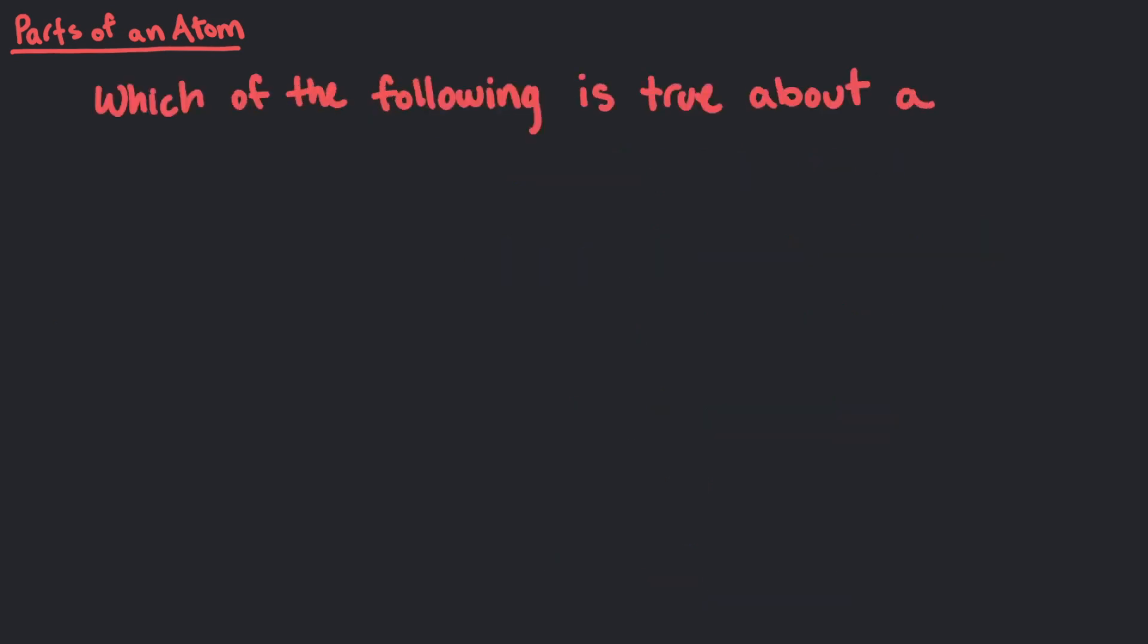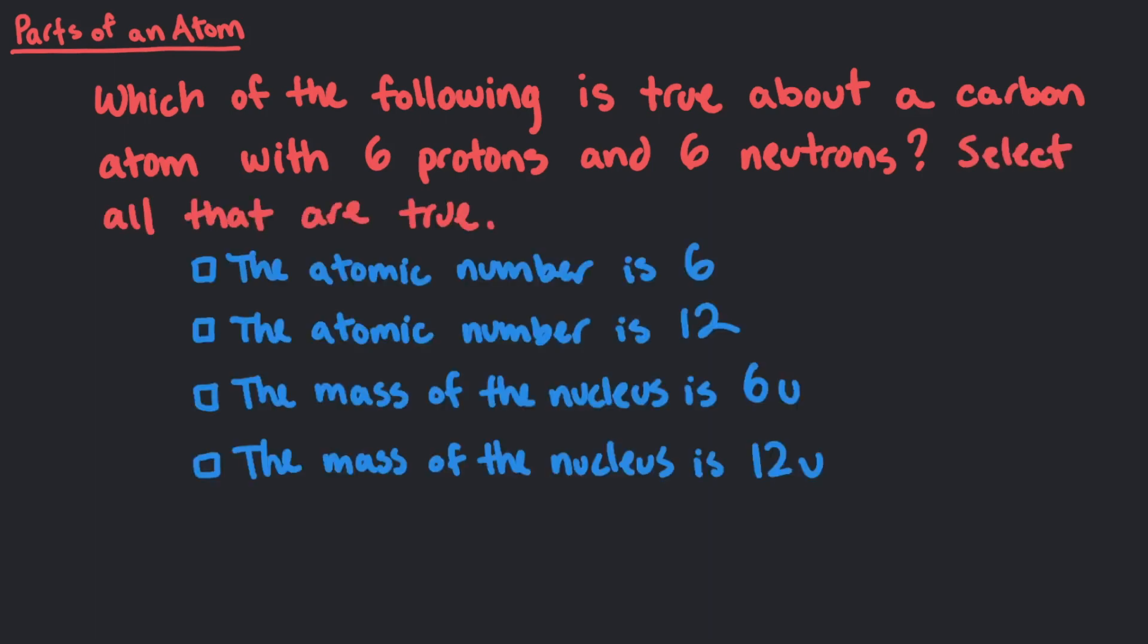Which of the following is true about a carbon atom with 6 protons and 6 neutrons? Select all that are true. A carbon atom with 6 protons and 6 neutrons will have a total mass of 12u and the atomic number is 6.